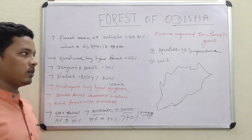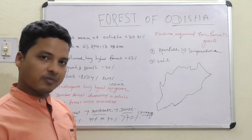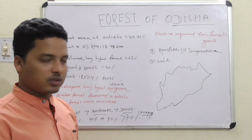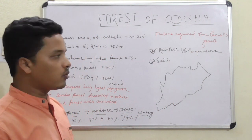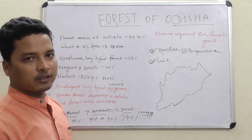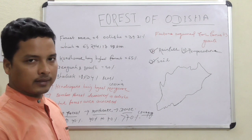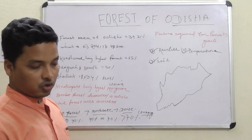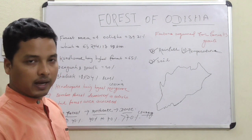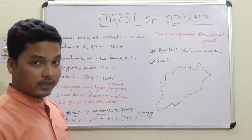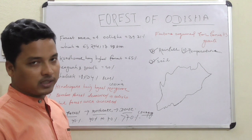To identify the types of forest of any region — whether Odisha, India, or elsewhere — you need to find out the rainfall, temperature, and soil of that region. If you have data on these three points, you can definitely identify what kind of forest would grow there. Even when direct data is not available, applying these three factors together helps identify the forest type.